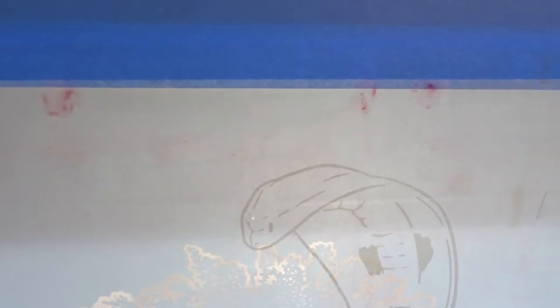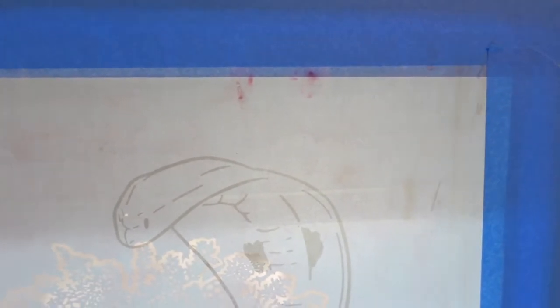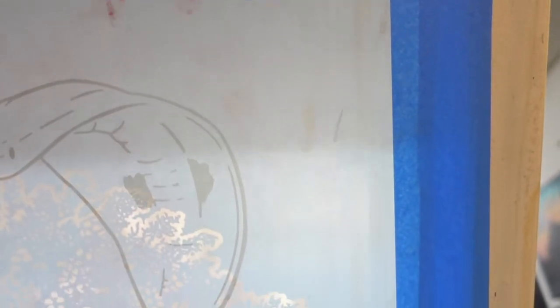Now we're checking for pinholes and anywhere that light is popping through the screen. All those areas are places where ink will push through and end up ruining our print, so we're going to take tape and tape off all those areas that are still open.